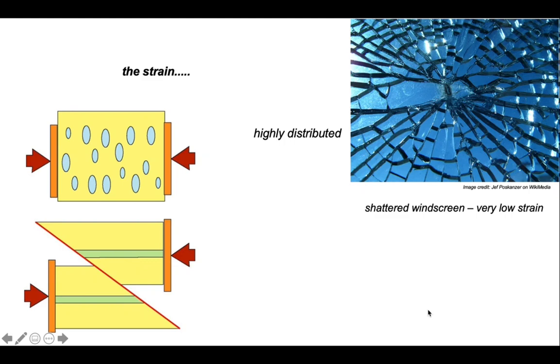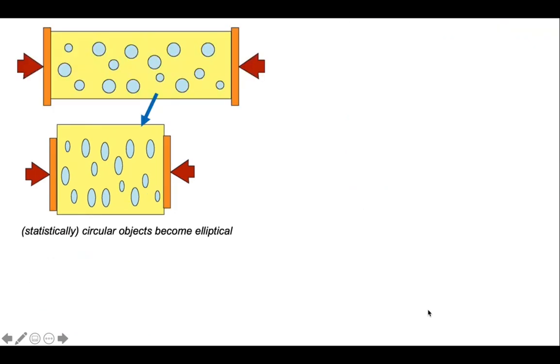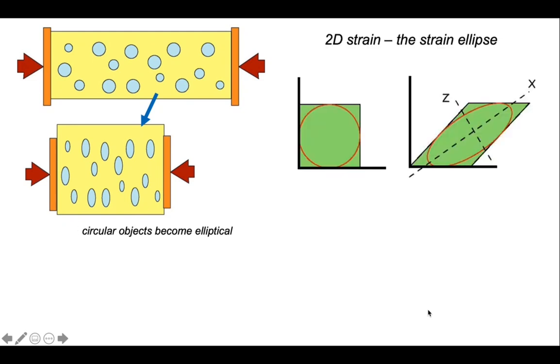That point made, let's look at this distortion. We can see as a consequence of squashing our model together that our originally circular objects have become elliptical. This allows us to introduce the concept of the two-dimensional strain ellipse. Before deformation, consider a circle with a single value for a diameter. But if we distort that model, we create an elliptical shape which has both a long and a short axis. We can quantify the strain through the ratio between the long axis X and the short axis Z.